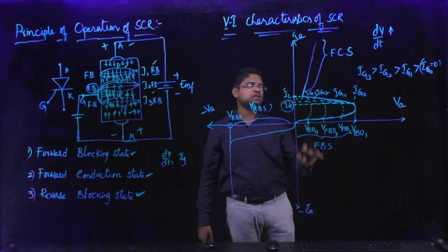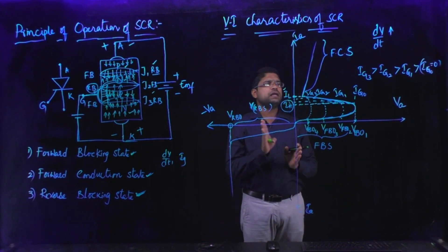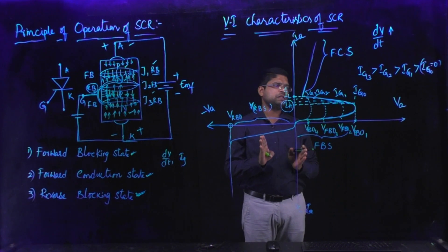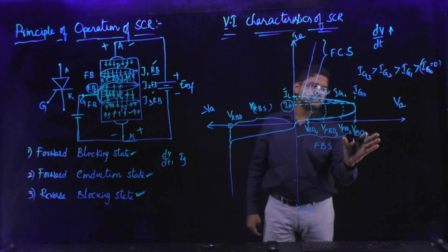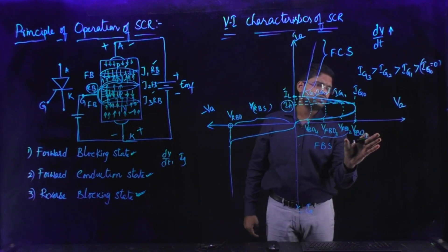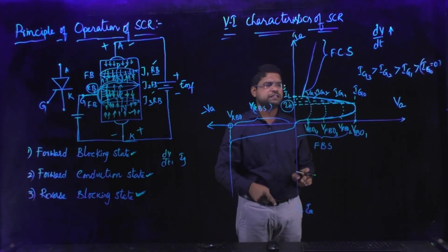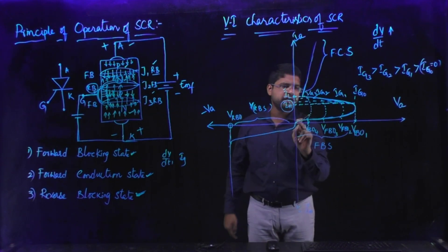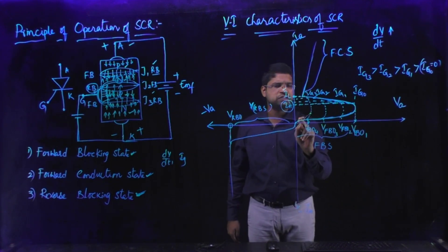Now let us see the V-A characteristics of SCR. The V-A characteristics of SCR are taken between the anode voltage and anode current — that means the voltage of the thyristor and the current flowing through the thyristor. The voltage across the thyristor is taken on the x-axis and the current flowing through the thyristor is taken on the y-axis.